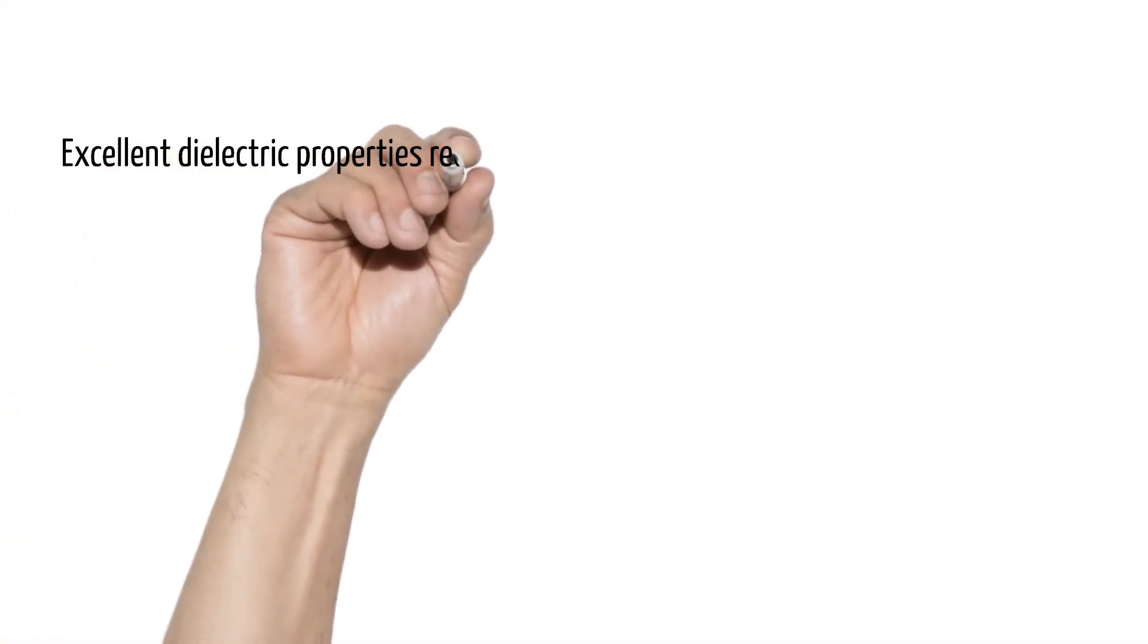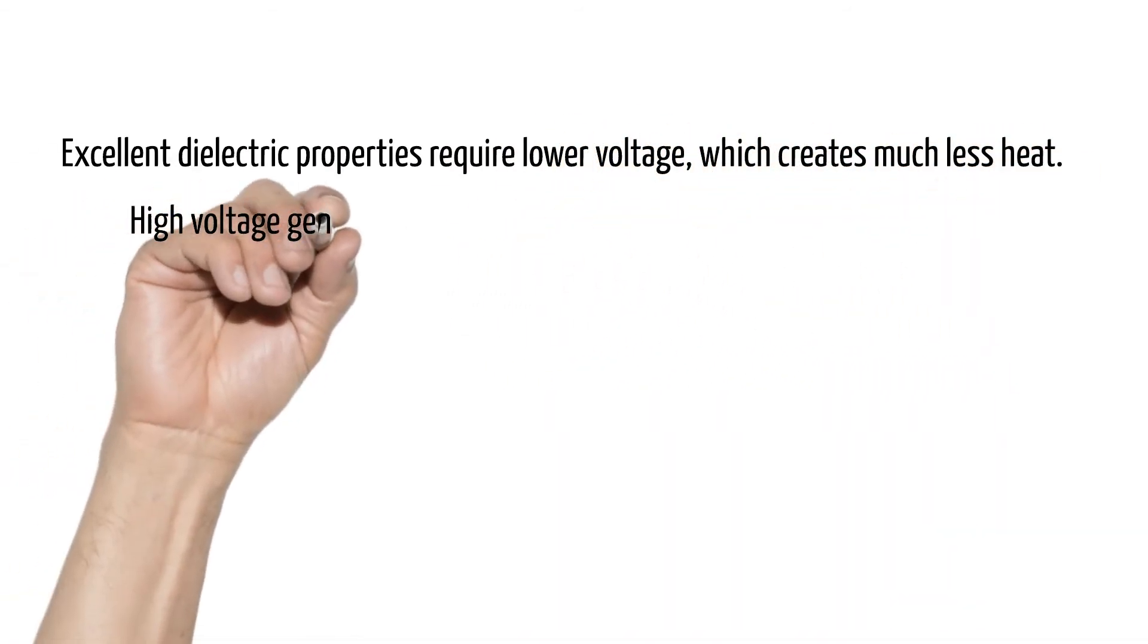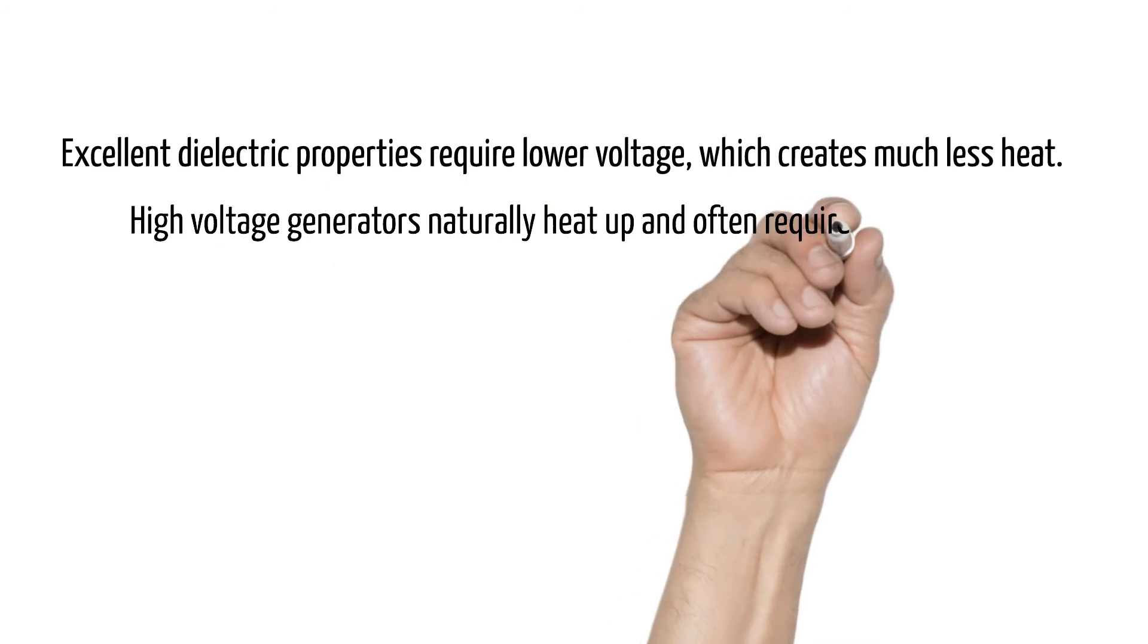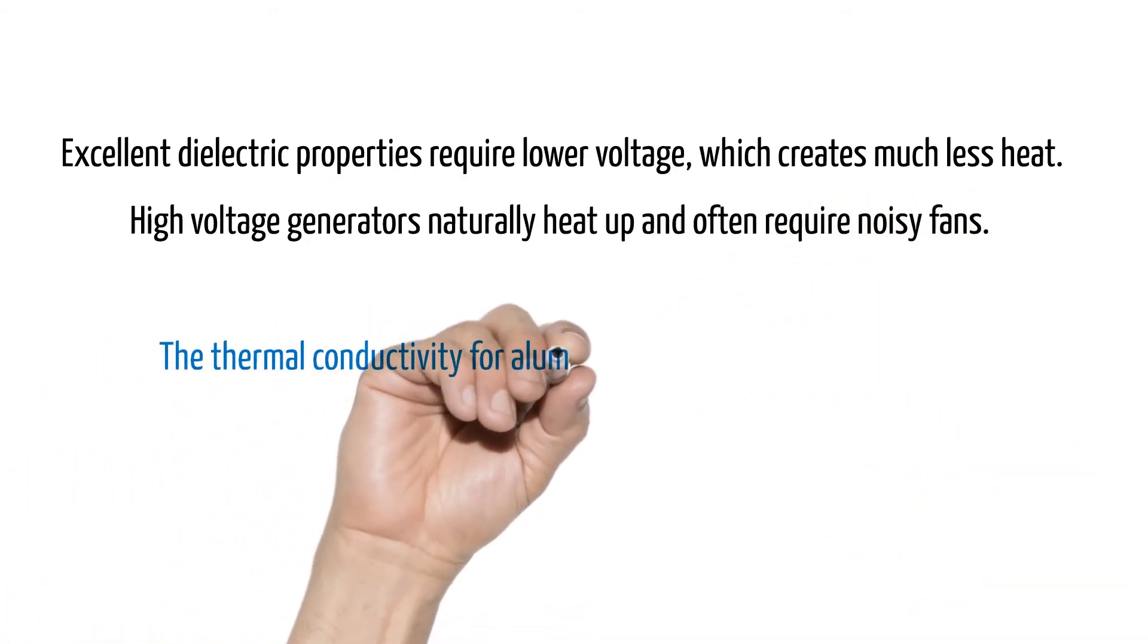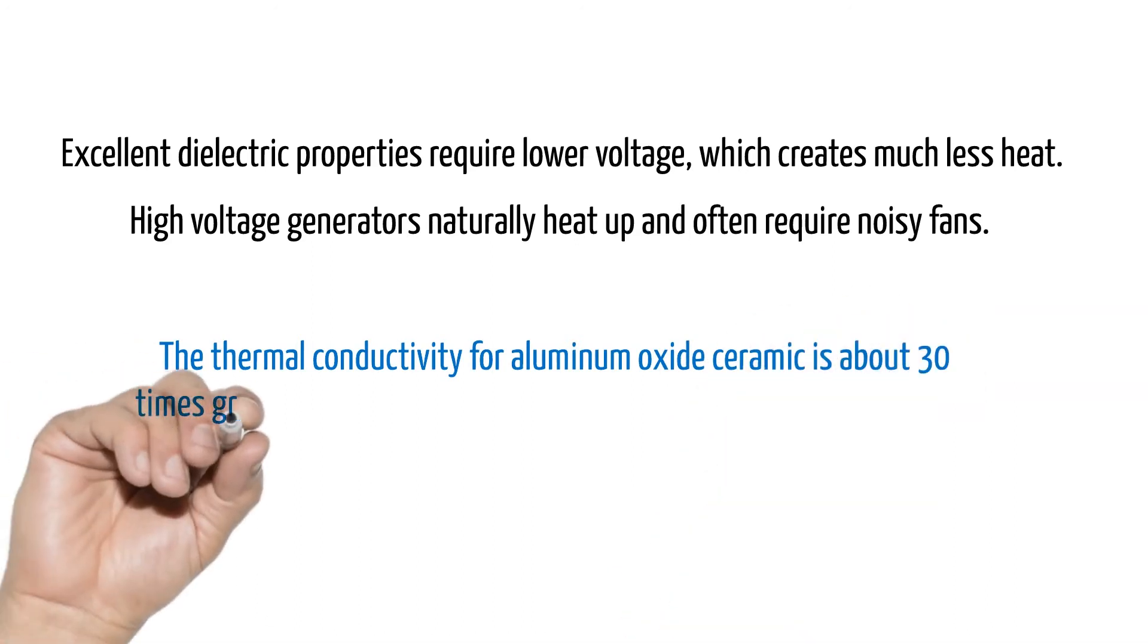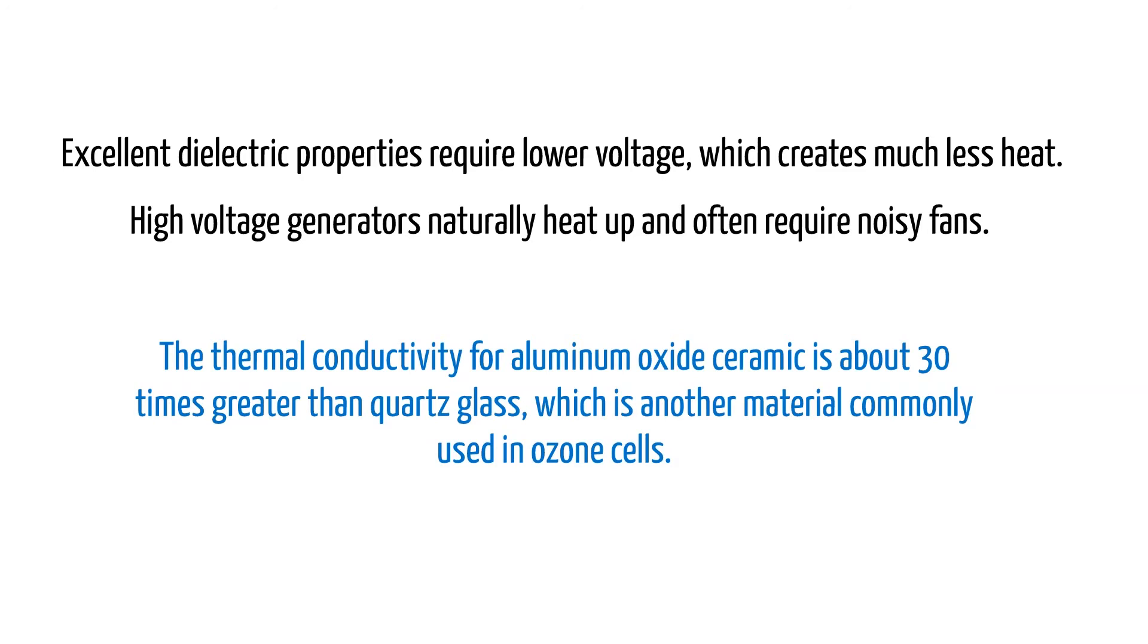Excellent dielectric properties require lower voltage which creates much less heat. High voltage generators naturally heat up and often require noisy fans. The thermal conductivity for aluminum oxide ceramic is about 30 times greater than quartz glass, which is another material commonly used in ozone cells. This means the natural heat dissipating qualities of aluminum oxide ceramic help the electrode stay at lower temperatures consistently, making them much more efficient and stable in comparison to glass.